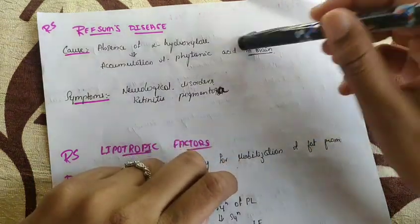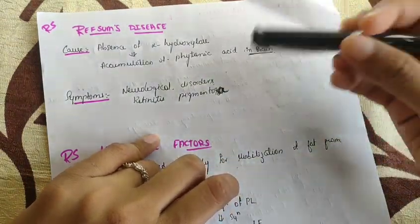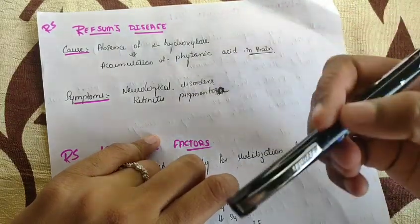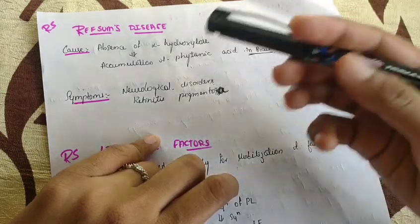They used to ask this question. The cause of this disease is absence of alpha hydroxylase enzyme, so tannic acid starts accumulating in blood and it also reaches the brain.